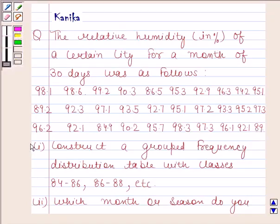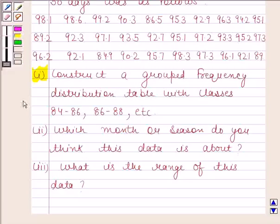First part is construct a grouped frequency distribution table with classes 84 to 86, 86 to 88, etc. Second part is which month or season do you think this data is about? Third part is what is the range of this data?